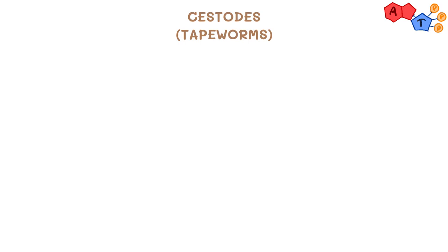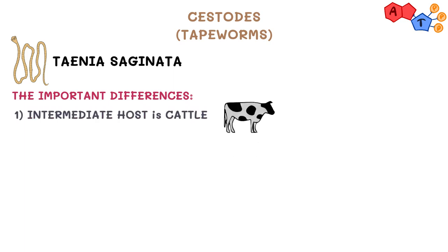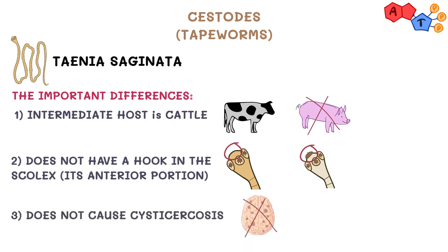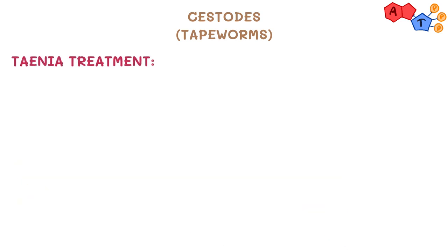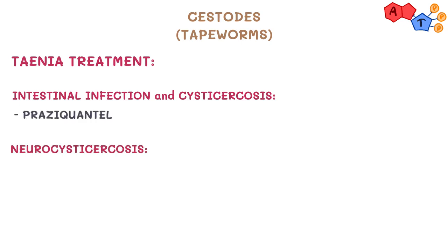Another tapeworm we can talk about is Taenia saginata. The important differences between Taenia solium and Taenia saginata are that the intermediate host is cattle, unlike solium which is swine. It does not have a hook in the scolex, which is the anterior portion of the worm, and unlike Taenia solium, Taenia saginata does not cause cysticercosis. For the treatment of intestinal disease and cysticercosis caused by Taenia solium, we use praziquantel, whereas for neurocysticercosis, we use albendazole.